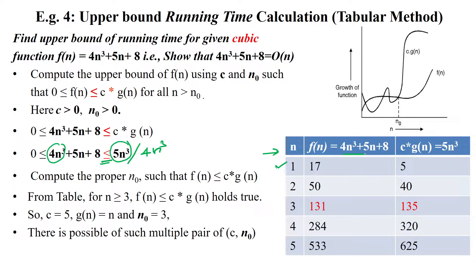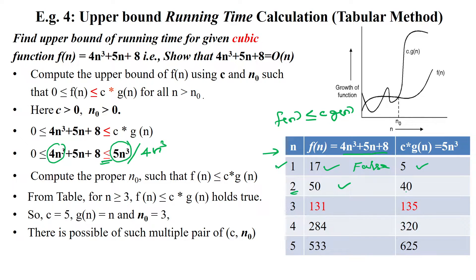For n = 1, substituting 4(1)³ + 5(1) + 8 gives f(n) = 17. Here c·g(n) is 5n³, so 5(1)³ = 5. This does not satisfy f(n) ≤ c·g(n). Likewise, when substituting n = 2, f(n) is 50 and c·g(n) is 40. This is also not satisfying — false.